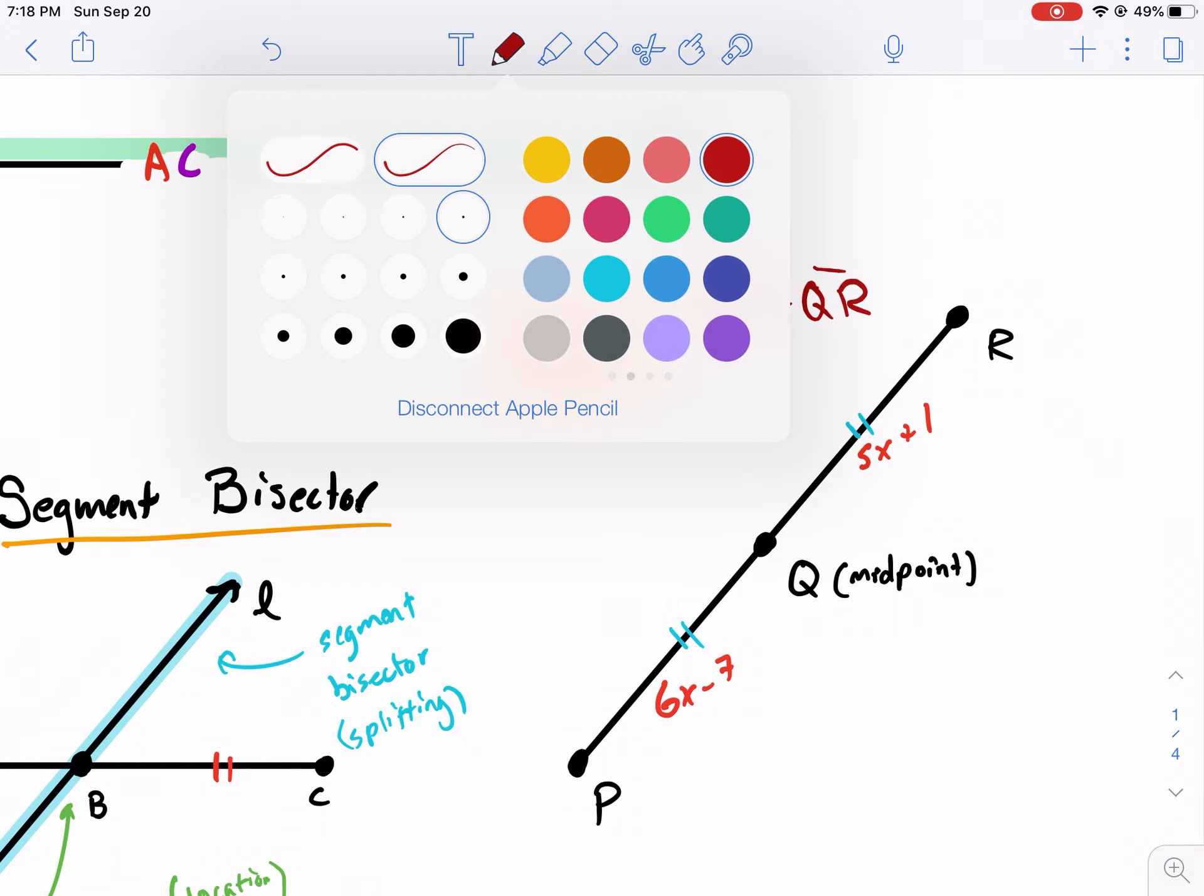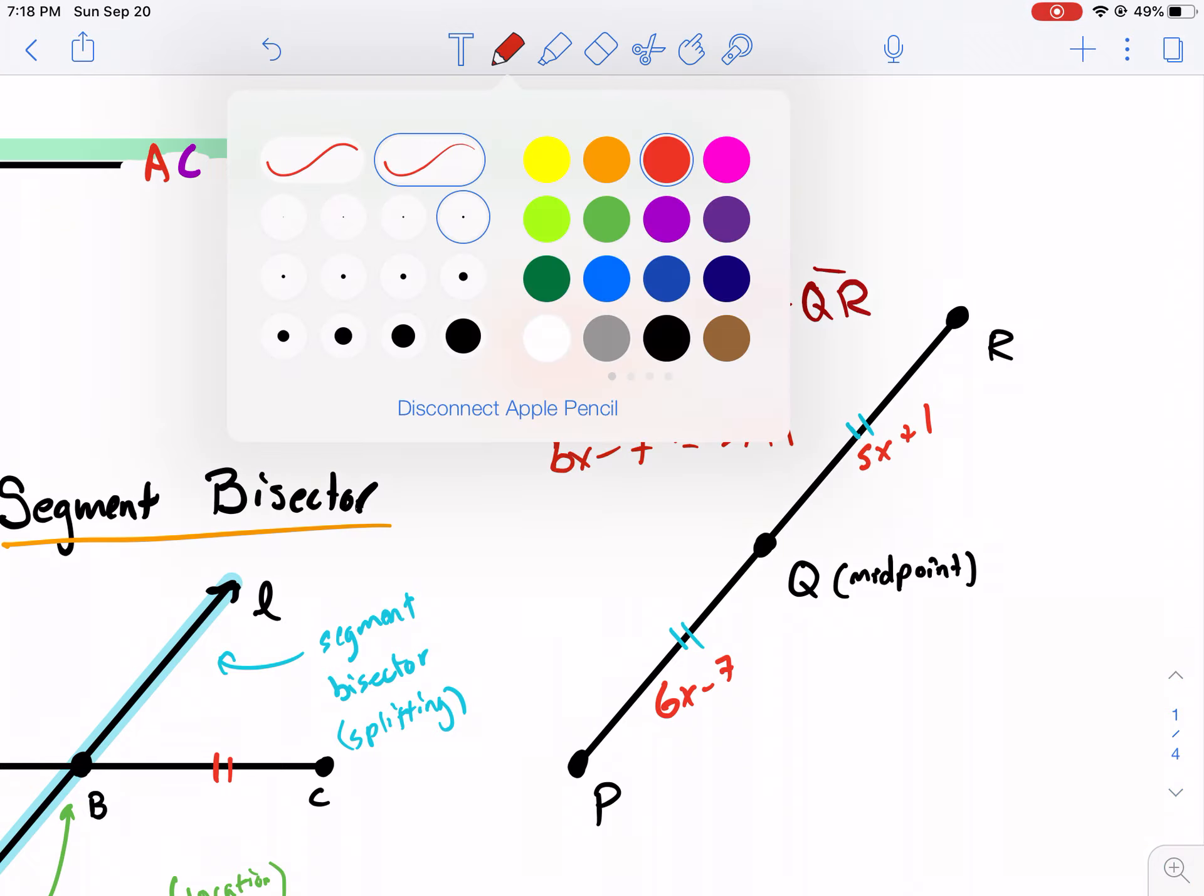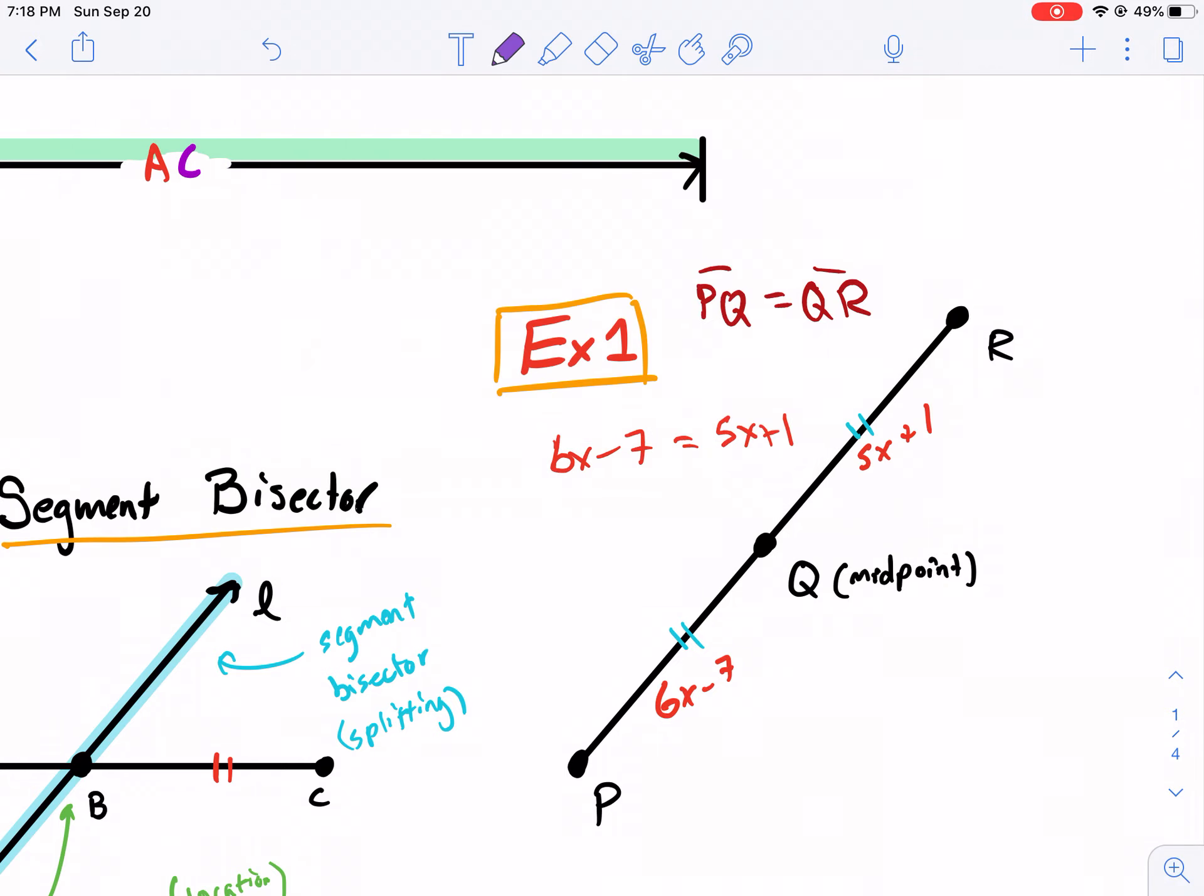Now we can substitute the value of those segments in for PQ and QR. So we have 6X minus 7, and we're going to set that equal to 5X plus 1. Next up, I think the best thing to do in this situation is to subtract the smaller variable from both sides. You want to combine your variables first. So I subtract 5X from both sides. I get X minus 7 equals 1. And now I need to add 7 to get the X by itself. And I get X equals 8.